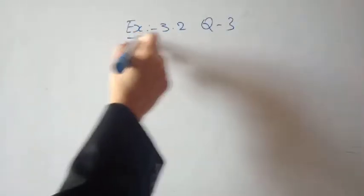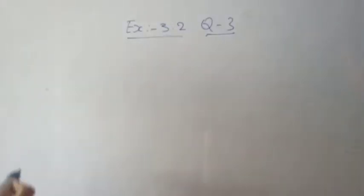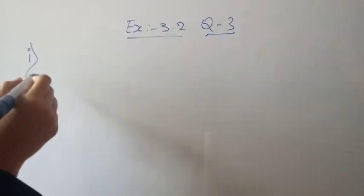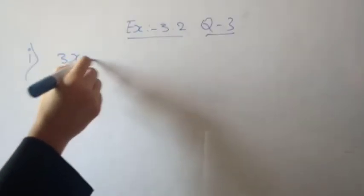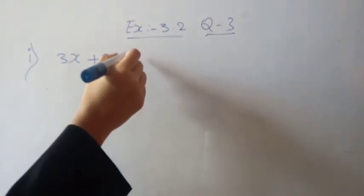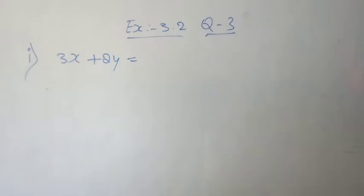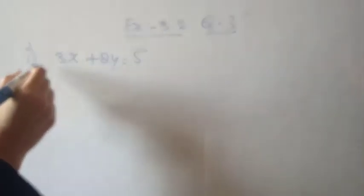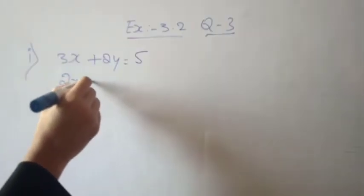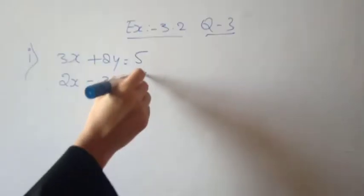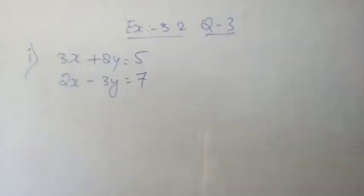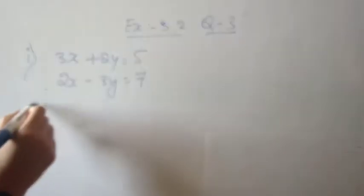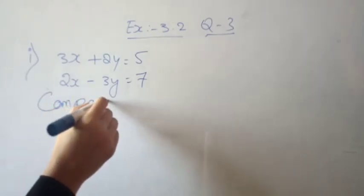Exercise 3.2, question number 3, first question. The first equation is 3x plus 2y is equal to 5. We'll move the constant to the left side with sign change. The second equation is 2x minus 3y is equal to 7. Move equals to the right side. Now we will compare.